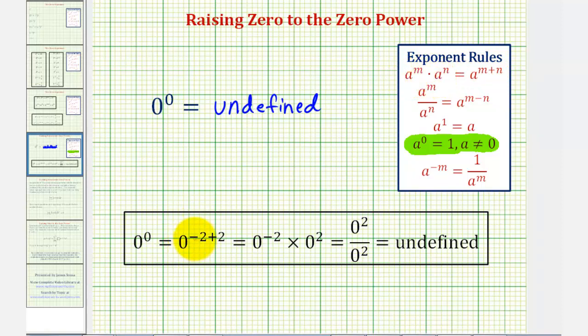So we can write zero to the power of negative two plus two as zero to the power of negative two times zero to the power of positive two. And now, using the property where we have a negative exponent, we can rewrite this product as a quotient, because we can rewrite zero to the power of negative two as one over zero to the power of positive two. So this product can be written as a quotient.